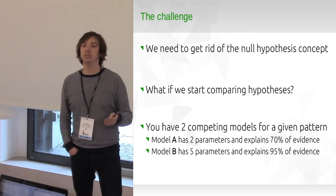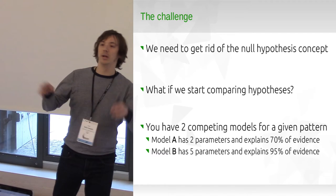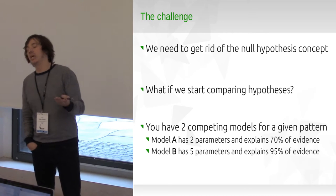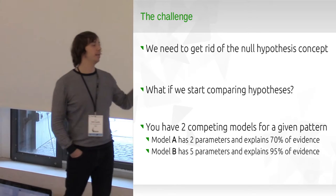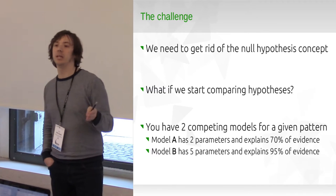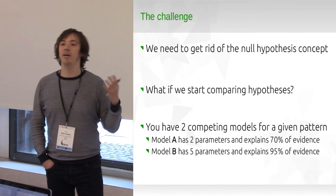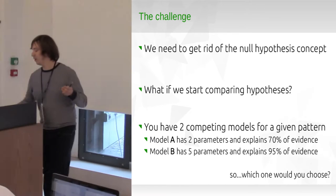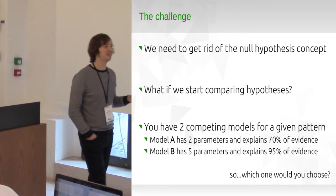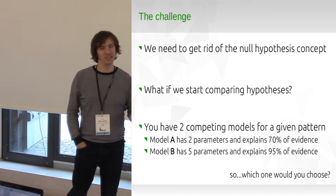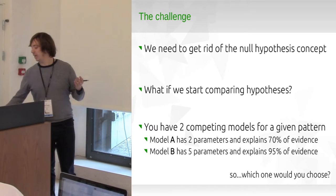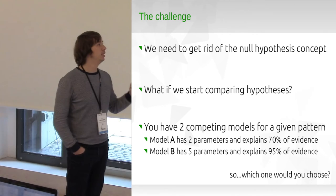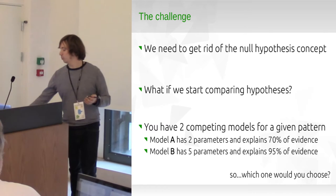Imagine you have two models, two simulations — say, an equation-based model and an agent-based model. How do you compare them? There are two things to take into account. Imagine one has two parameters and fits the data decently. The other one is more detailed — it has five parameters but a better fit to the data. Which one would you choose as the better explanation?